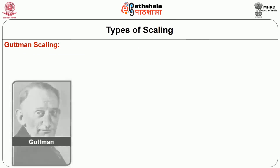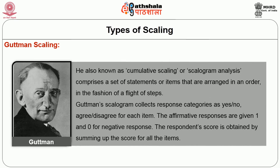Guttman scaling is also known as cumulative scaling or scalogram analysis. It comprises a set of statements arranged in the fashion of a flight of steps, where an affirmative response to any given statement implies affirmation of the preceding statements. For example, would you be willing to accept a black person as a visitor to your country? Would you be willing to have a black person living next door? Would you be willing to make friendship with a black person? Would you be willing to marry a black person? A respondent willing to marry a black person is presumed to accept all preceding items. Guttman's scalogram collects responses as yes or no, with affirmative responses given 1 and negative responses given 0, and the respondent's score is obtained by summing all item scores.